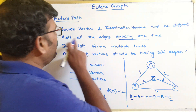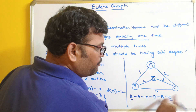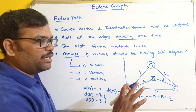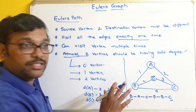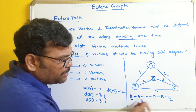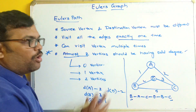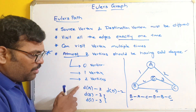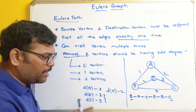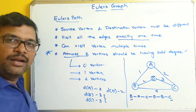Visit all the edges exactly once — how many edges are there? 1, 2, 3, 4, and 5. None of the edges have been repeated twice. The second condition also satisfied: vertices can be visited multiple times — B has been visited multiple times, C has been visited multiple times, and there is no issue about that. We found that at most two vertices are having odd degree, so we got the Euler's path for this particular graph.